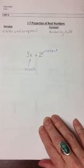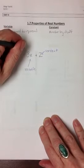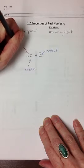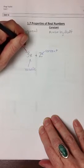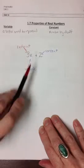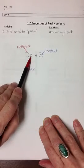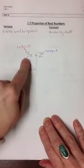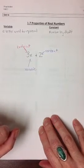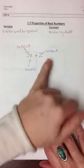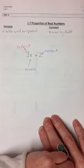Our coefficient is the 3, because it's attached to the x. And we call this whole thing, 3x plus 2, an algebraic expression. You'll notice it doesn't have any equal sign in it. That's what makes it an expression.